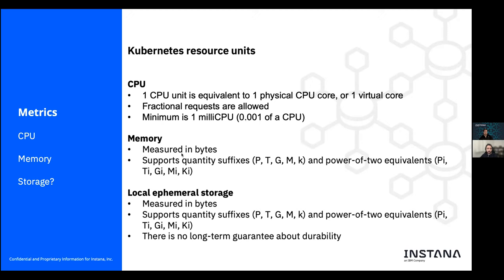For memory, it is measured in bytes. It supports two different suffixes: you can use quantity suffixes like tera, giga, mega, kilo, and so on, as well as power-of-two equivalents like tebibytes, gibibytes, and so on. There is also another resource that is probably less commonly used, which is local ephemeral storage. For some workloads, it might be important to ensure your container runs on a node that has this kind of storage with enough space available. It is also measured in bytes and supports the same quantity suffixes and power-of-two equivalents.